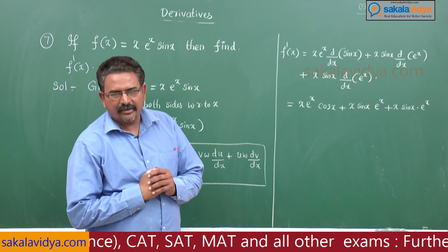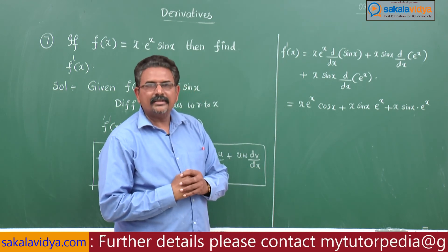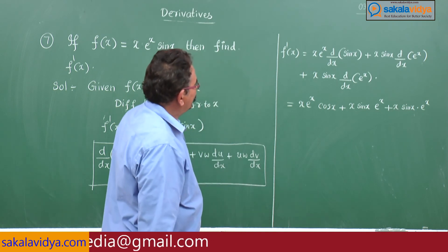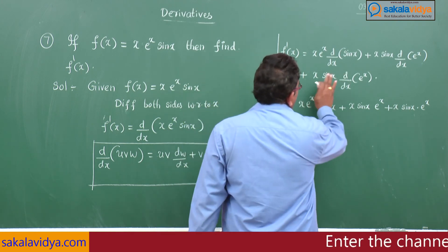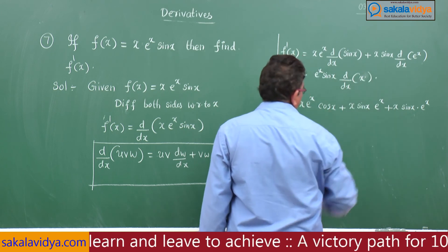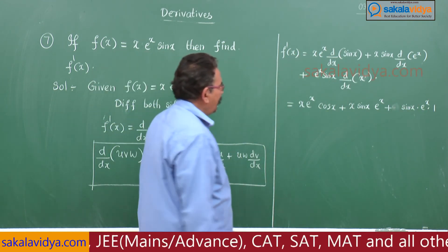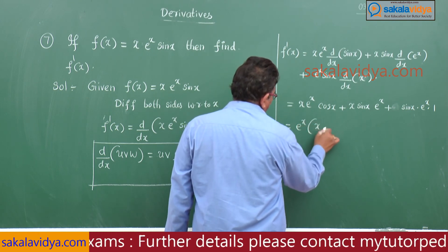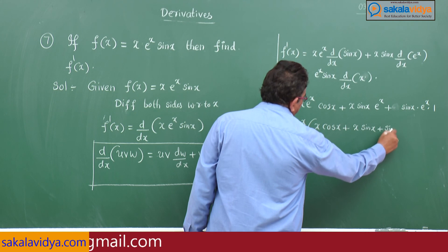Looking for common factors in the three terms: eˣ can be taken out as a common factor. Taking eˣ common, we get f'(x) = eˣ(x cos x + x sin x + sin x). This is the final answer.